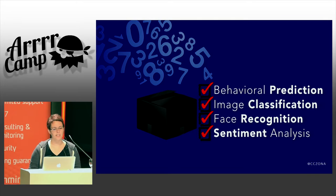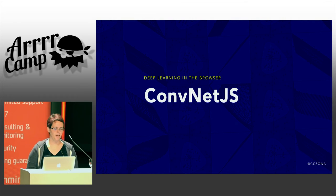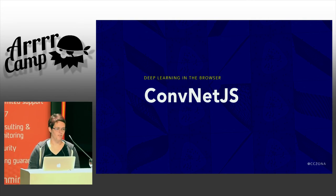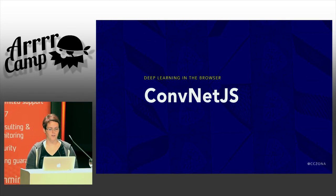If this is starting to sound intriguing, you can try it out. ConvNetJS allows you to do some deep learning experimentation in the browser. Obviously this is not going to get you the speed benefits, but it's an opportunity to try out some different models.